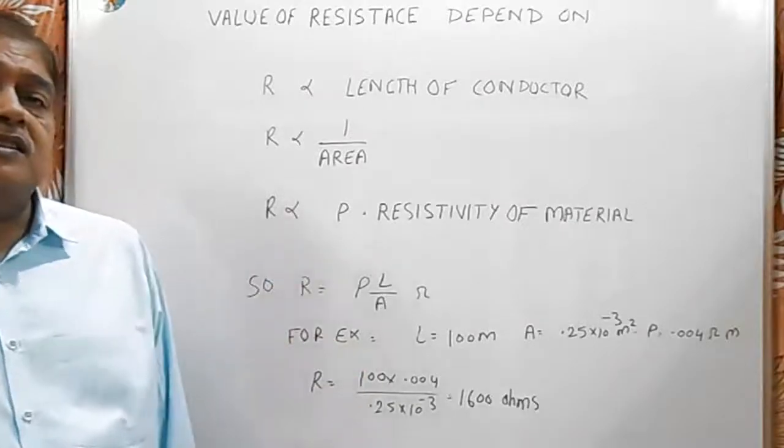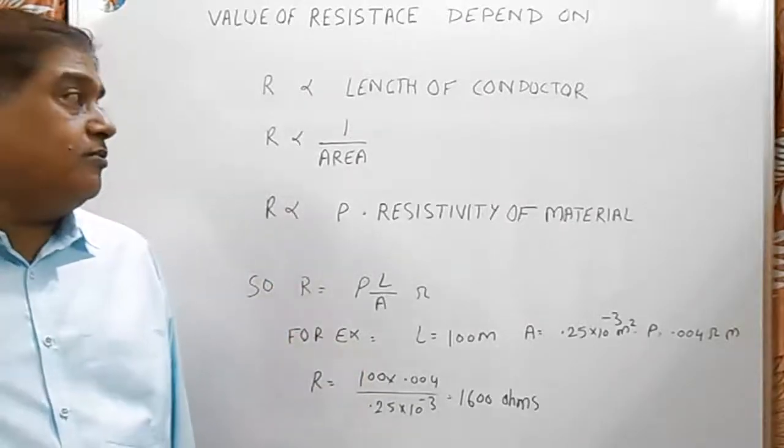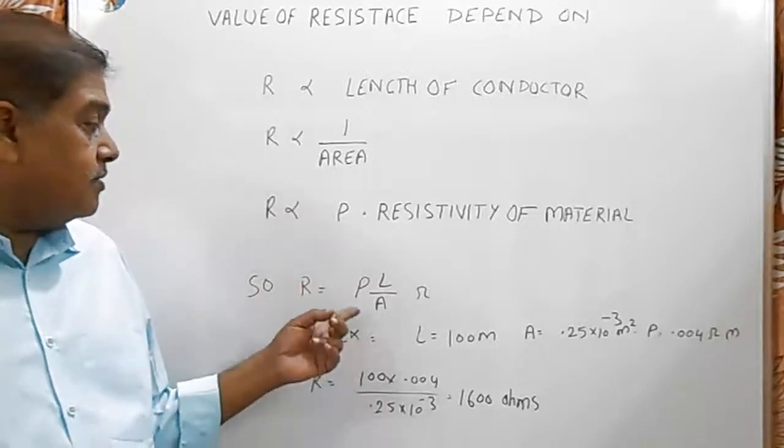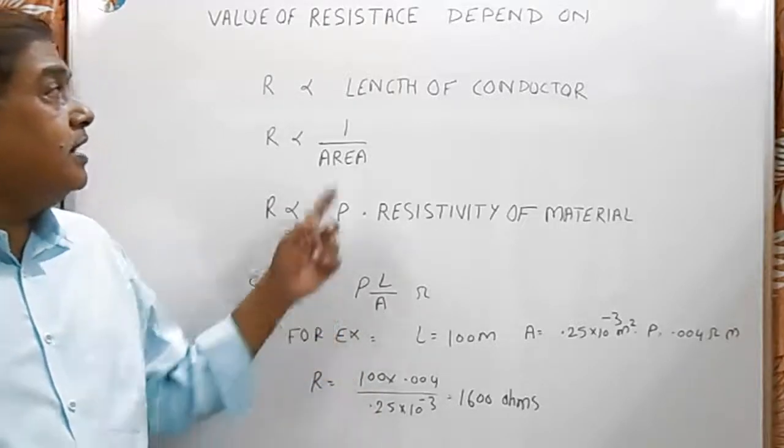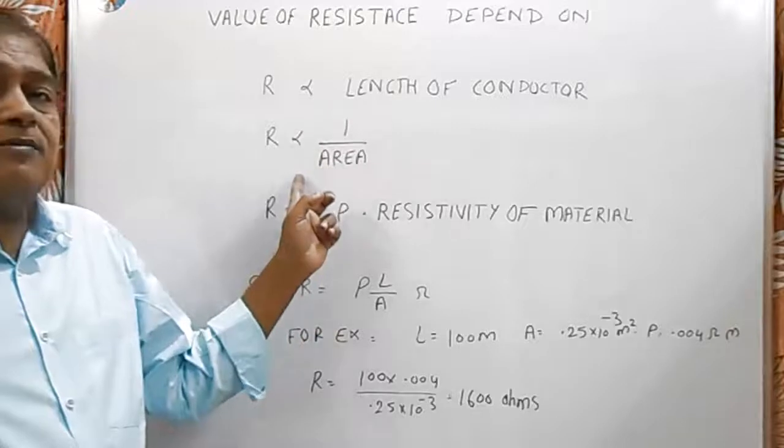If we know the resistivity of the material of conductor, length of the wire, and the area of cross section of the wire.